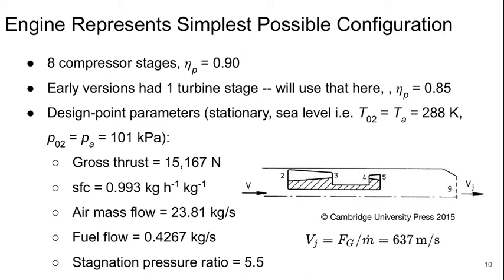And the design point parameters for stationary operation at sea level, basically where T02 is TA's standard atmospheric temperature and the P02 is PA's standard atmospheric pressure. We get about 15 kN of gross thrust.